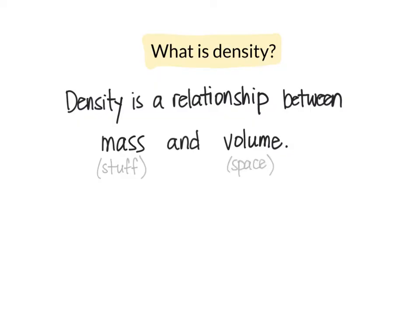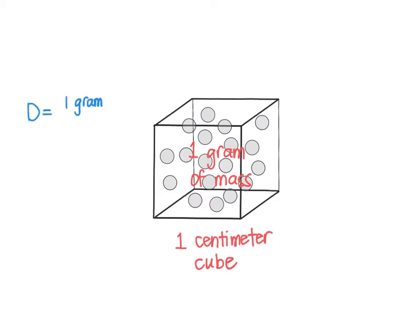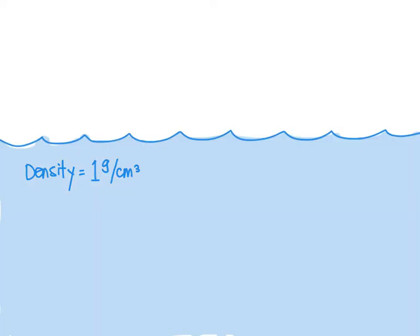The formula for density is: density equals mass divided by volume. So let's say the stuff in this cube is one gram of mass and the cube is one centimeter cubed. So the density of this is one gram divided by one centimeter cubed — that is one gram per centimeter cubed. You know what else is one gram per centimeter cubed? Water. If we were to take one centimeter cubed of water and evaluate its mass, there would be one gram of mass in it.